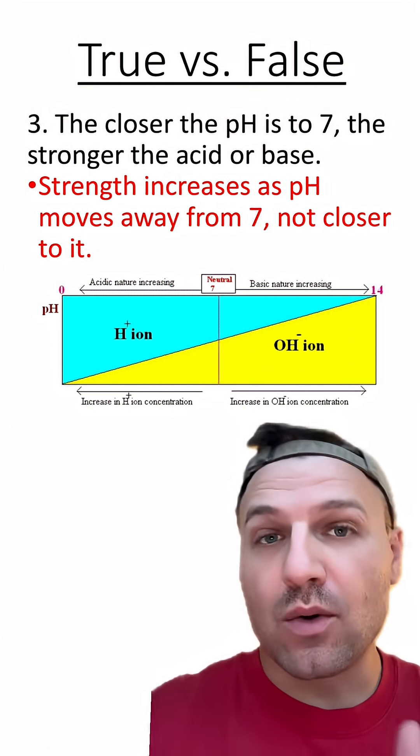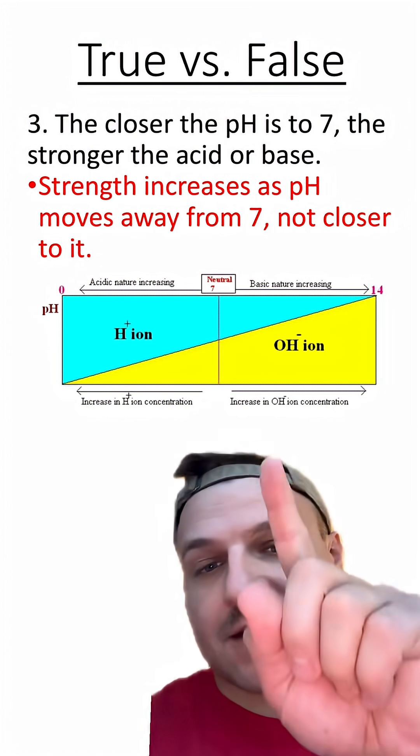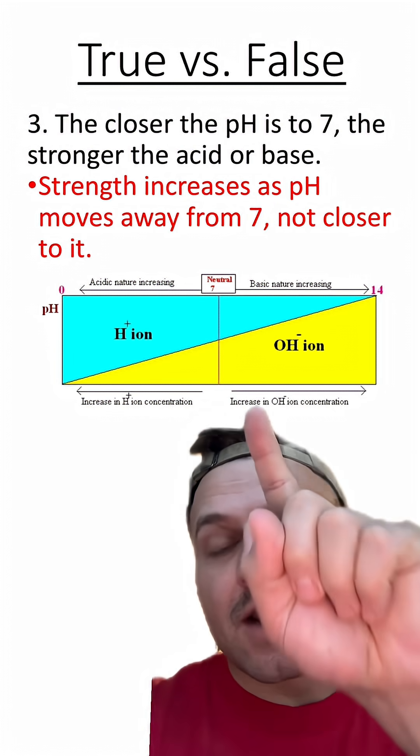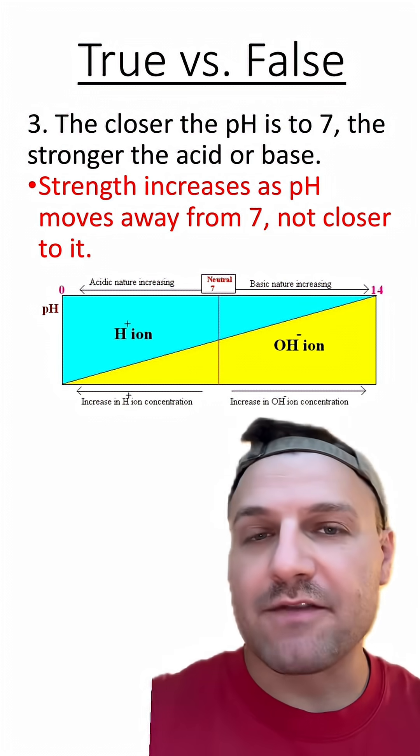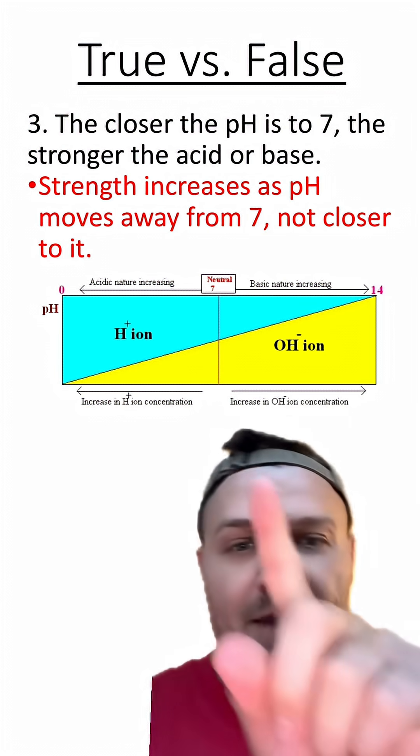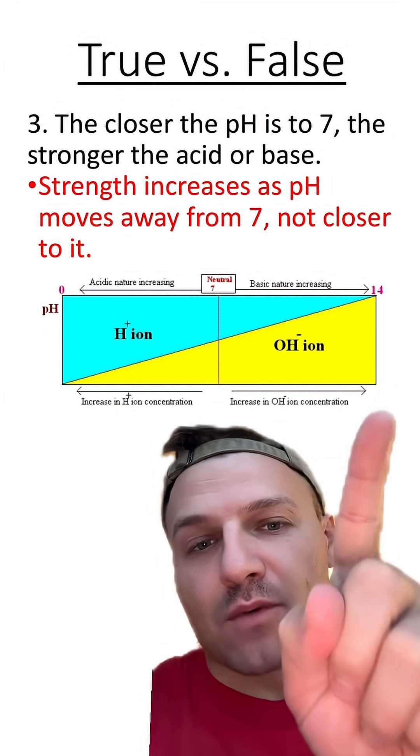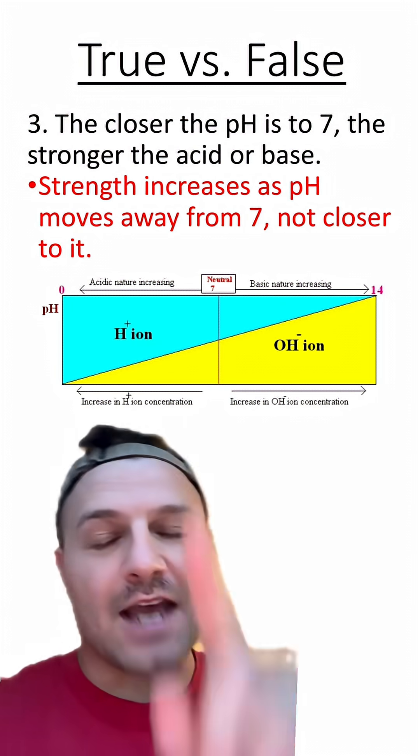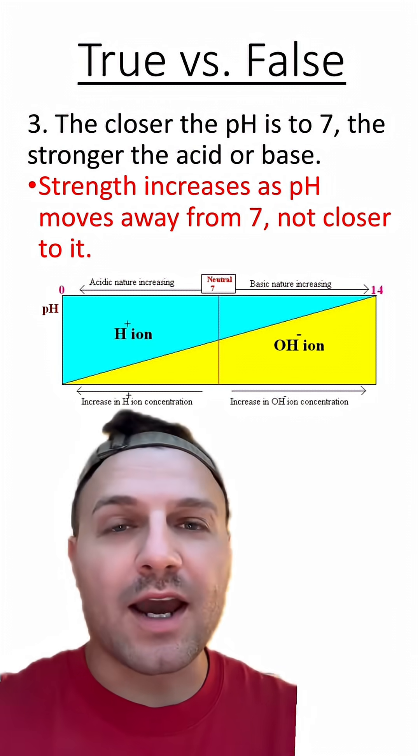That's because in the middle here, the pH of 7, this is neutral. It has even amounts of hydrogen and hydroxyl ions. As you get closer to 14, you have more hydroxyl ions. And as you get closer to zero, you have more hydrogen ions.